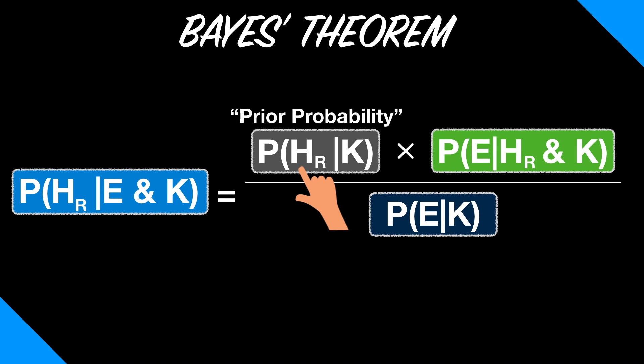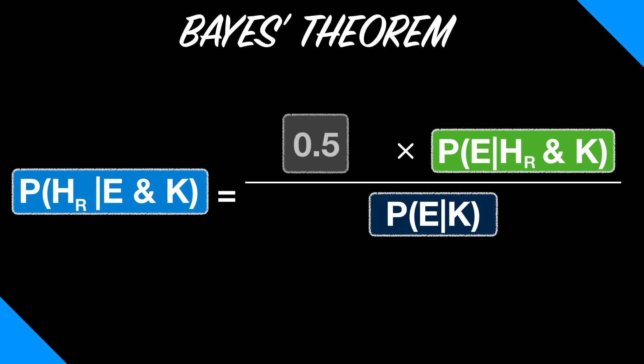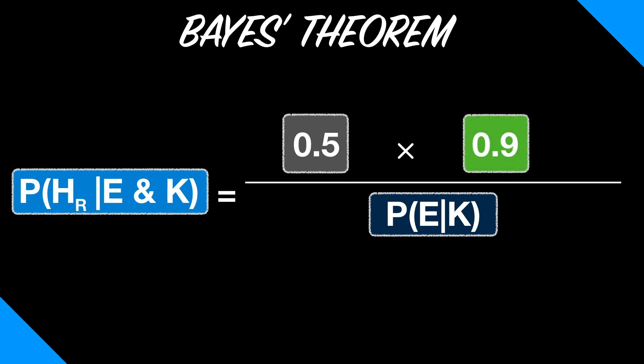To figure this out, what level of confidence should you have in HR, the hypothesis that you drew from the vase with mostly red marbles, before considering the evidence that you chose a red marble? The answer would be one half, because you had two vases to choose from, and you chose one at random. We can now begin to plug the values we already know into Bayes' Theorem. We know the prior probability of HR is one half. And we know the epistemic probability of E, given HR and K, is nine tenths, or point nine. Now we need to find the probability of E, given K.